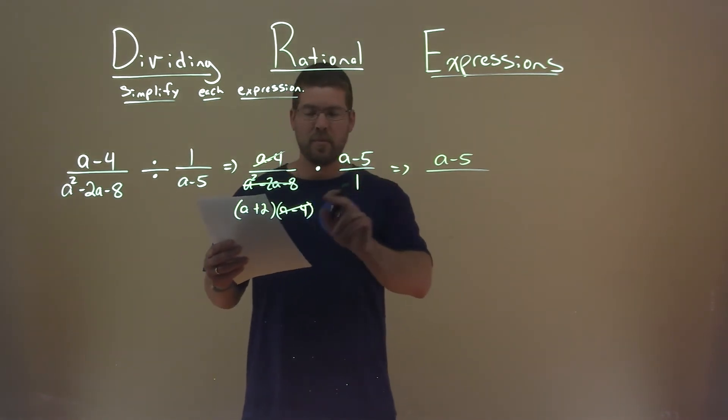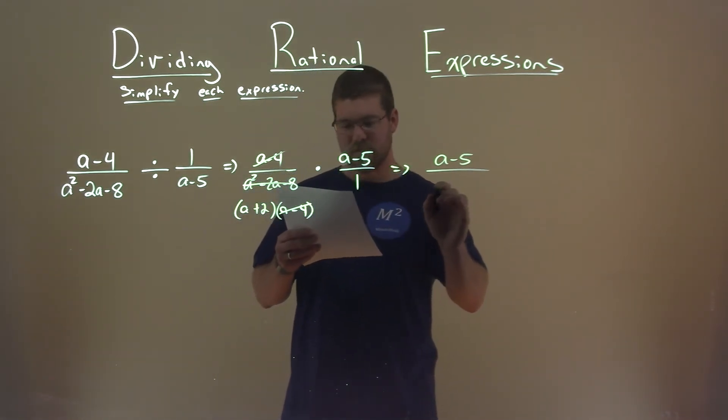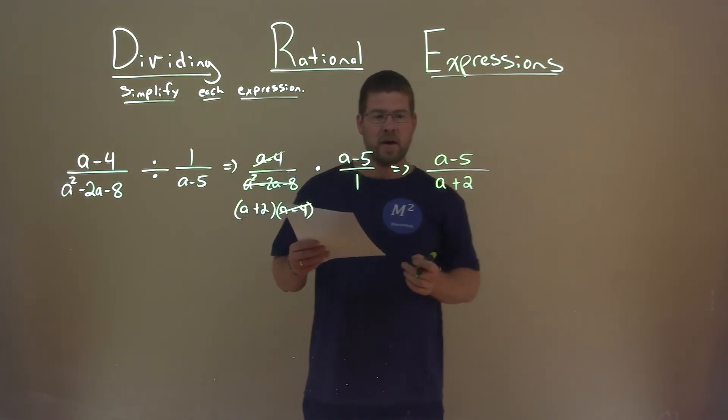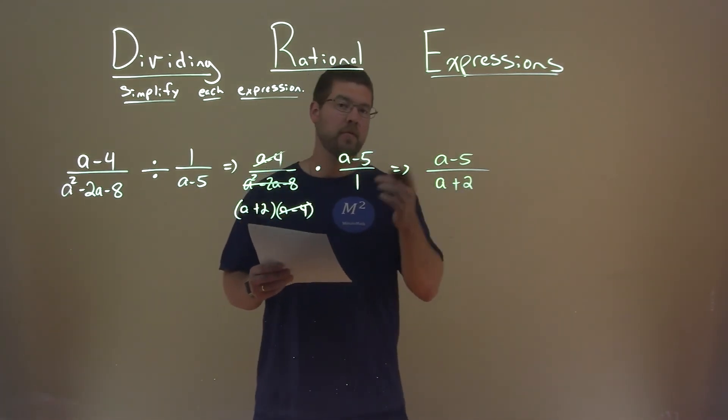Denominator: a plus 2 times 1, which is just a plus 2. And that's it. a minus 5 over a plus 2 is our final answer.